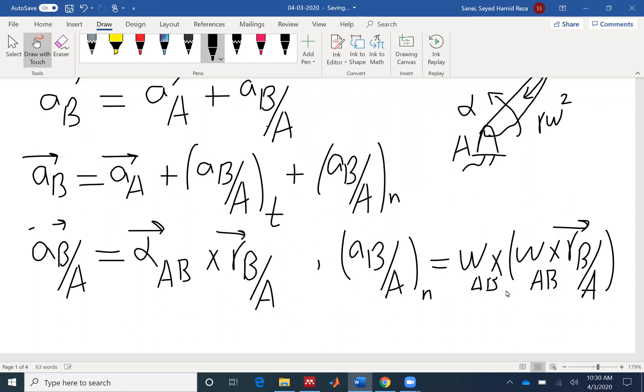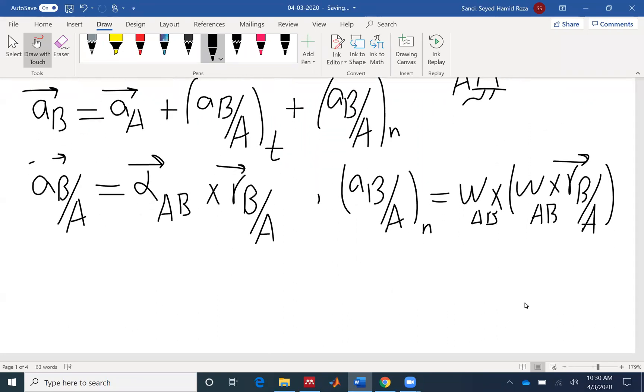So omega R, instead of omega R, we can write velocity. So this component is VBA, the velocity of B with respect to A.